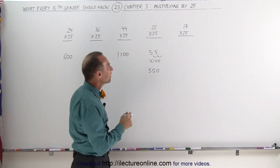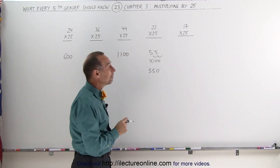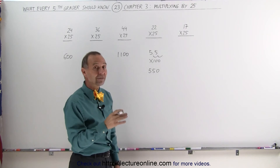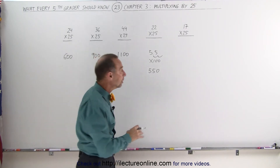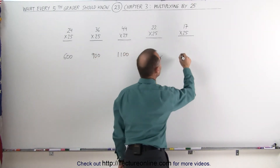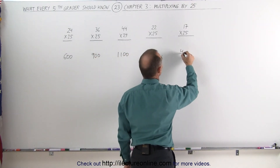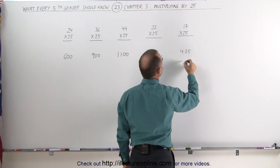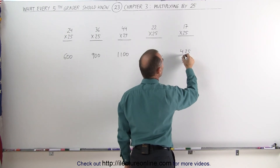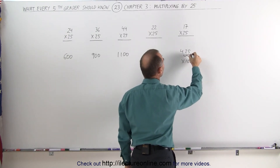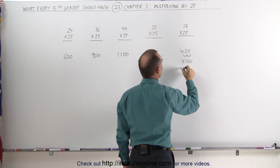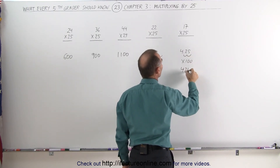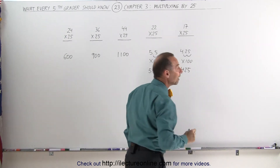How about the number 17 times 25? You take 17 divided by 4, that would be 4.25, and then multiply times 100, which means move the decimal place over twice, and you get 425.